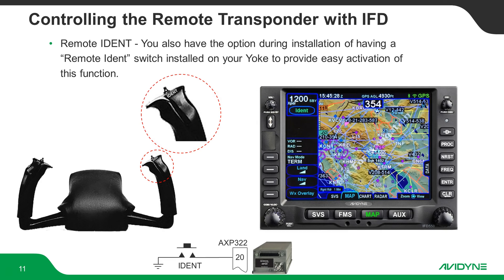Optionally, the Avidyne remote transponder does support a remote IDENT switch. A lot of folks wire those into the yoke — it's a momentary ground and it will remote IDENT for you so you don't have to reach across. That would require someone to wire it in during installation, but it is an option. When you do IDENT, it turns green right here to let you know it's IDENTing.